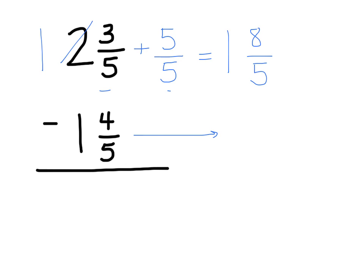I'm going to just bring over 1 and 4 fifths and my subtraction symbol because now I'm able to subtract those numbers. So starting with my fractions, 8 fifths minus 4 fifths is 4 fifths. 1 minus 1 is 0 so there's nothing here. My final answer then is 4 fifths unless I can simplify, and in this case I can't, so 4 fifths is my absolute final answer to 2 and 3 fifths minus 1 and 4 fifths.